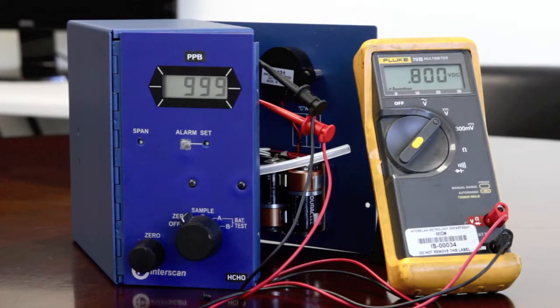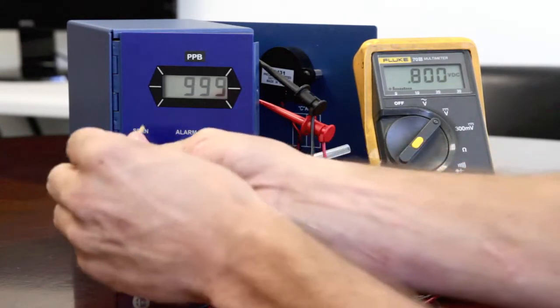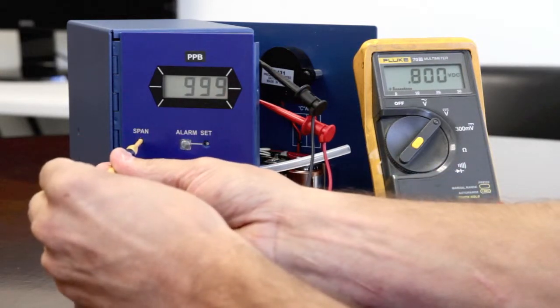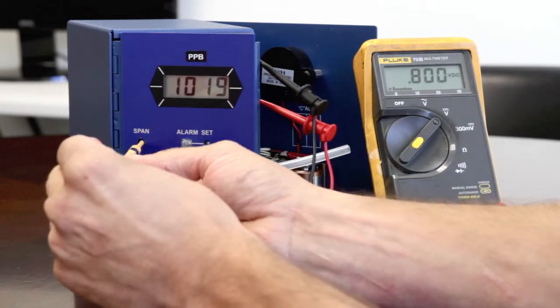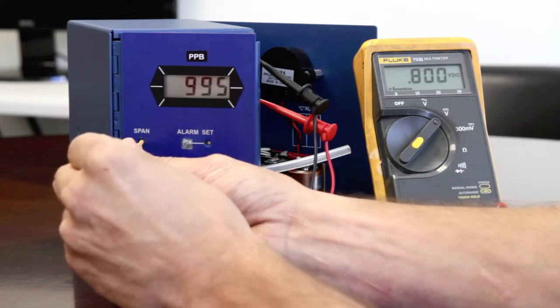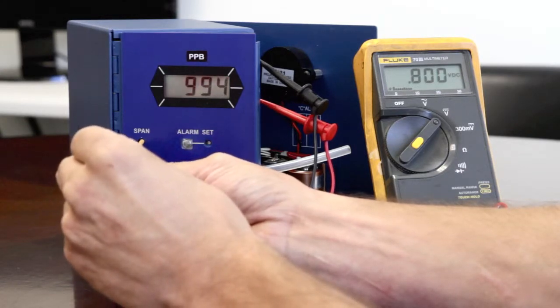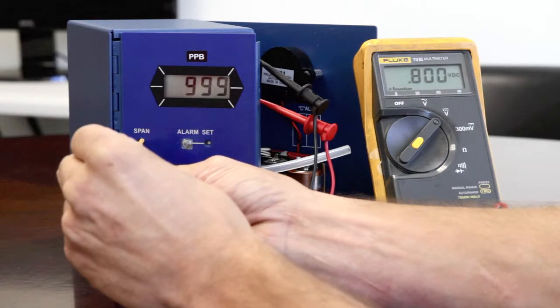Adjust the span control so that the instrument digital display reads the value indicated on the ECS certificate. For the purposes of this demonstration, the instrument should read 1000.